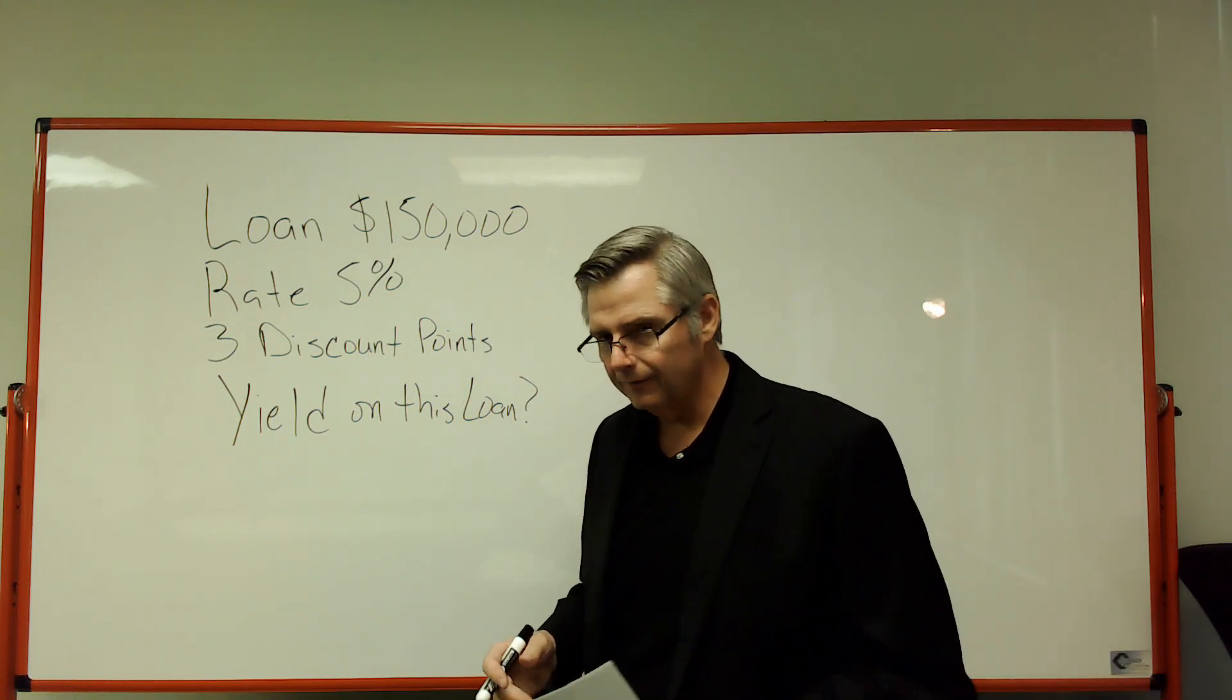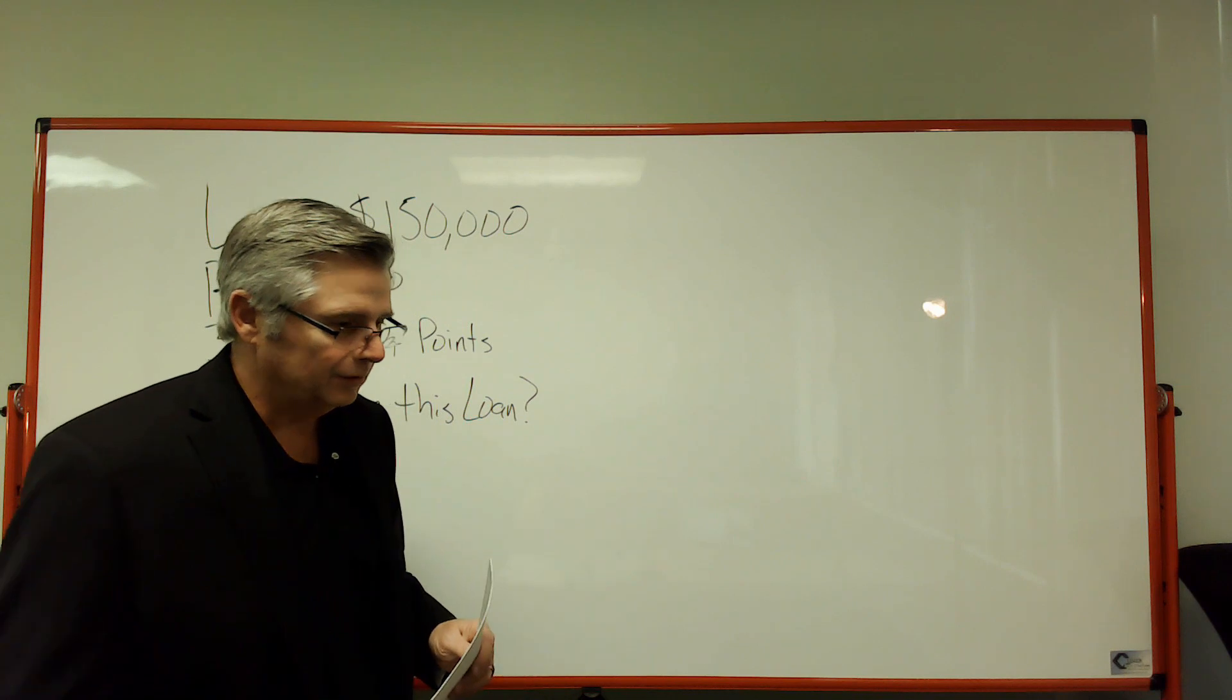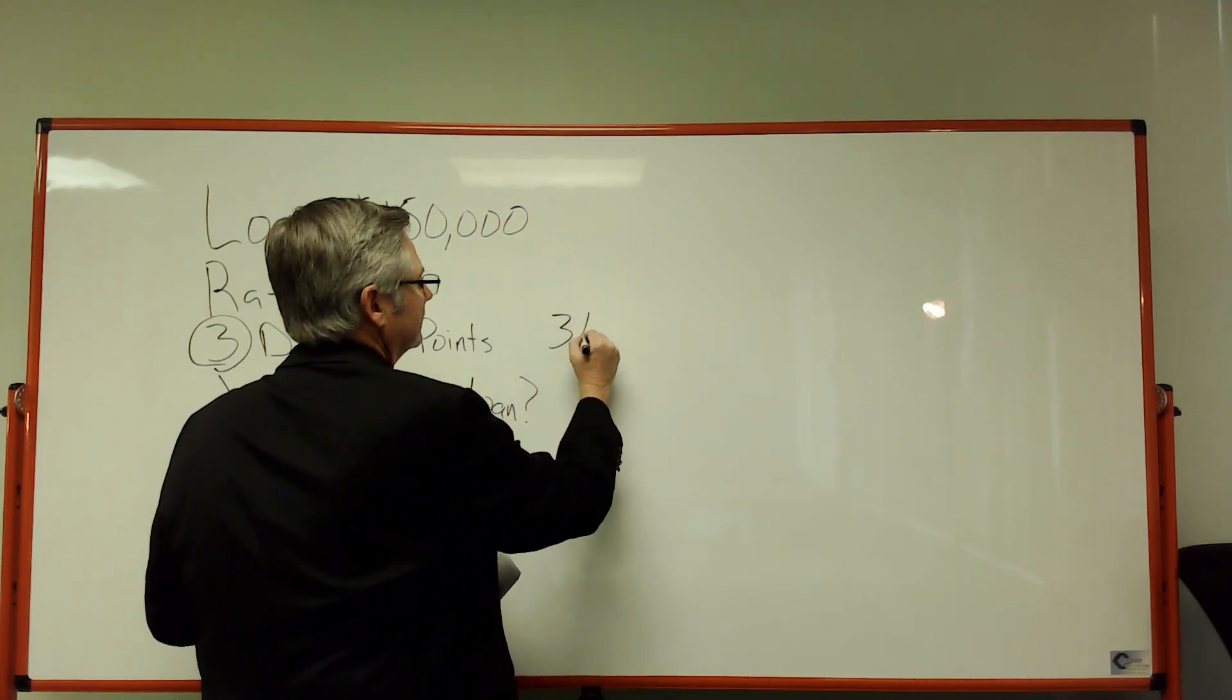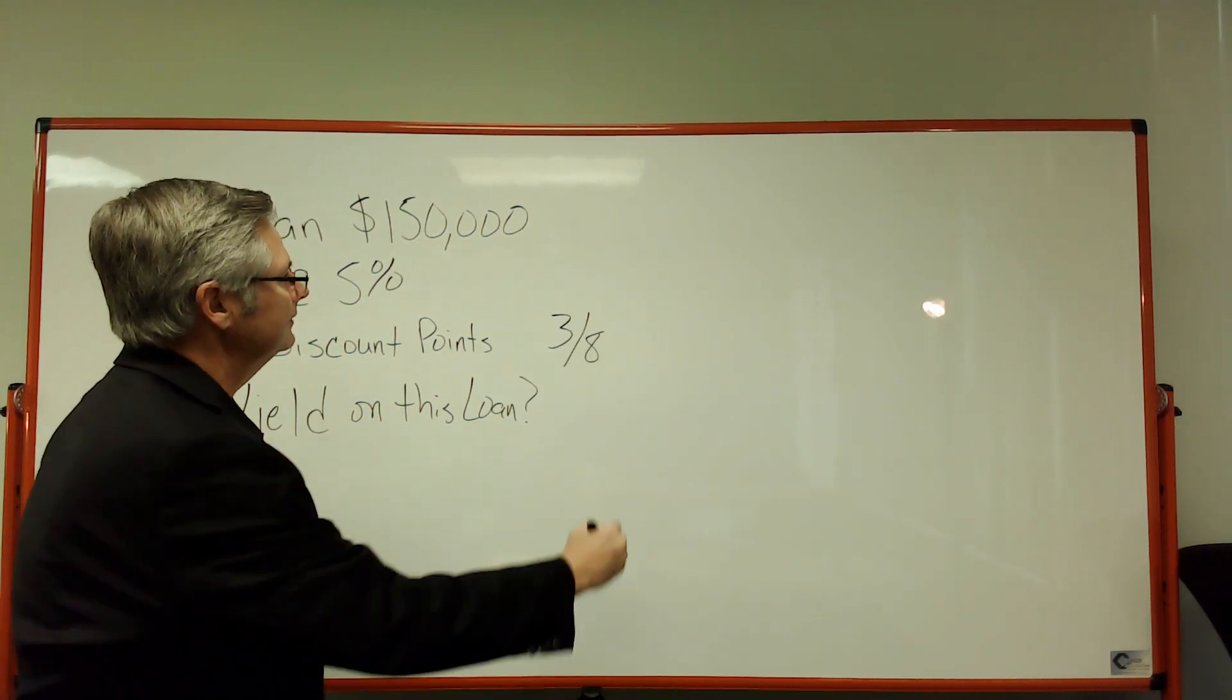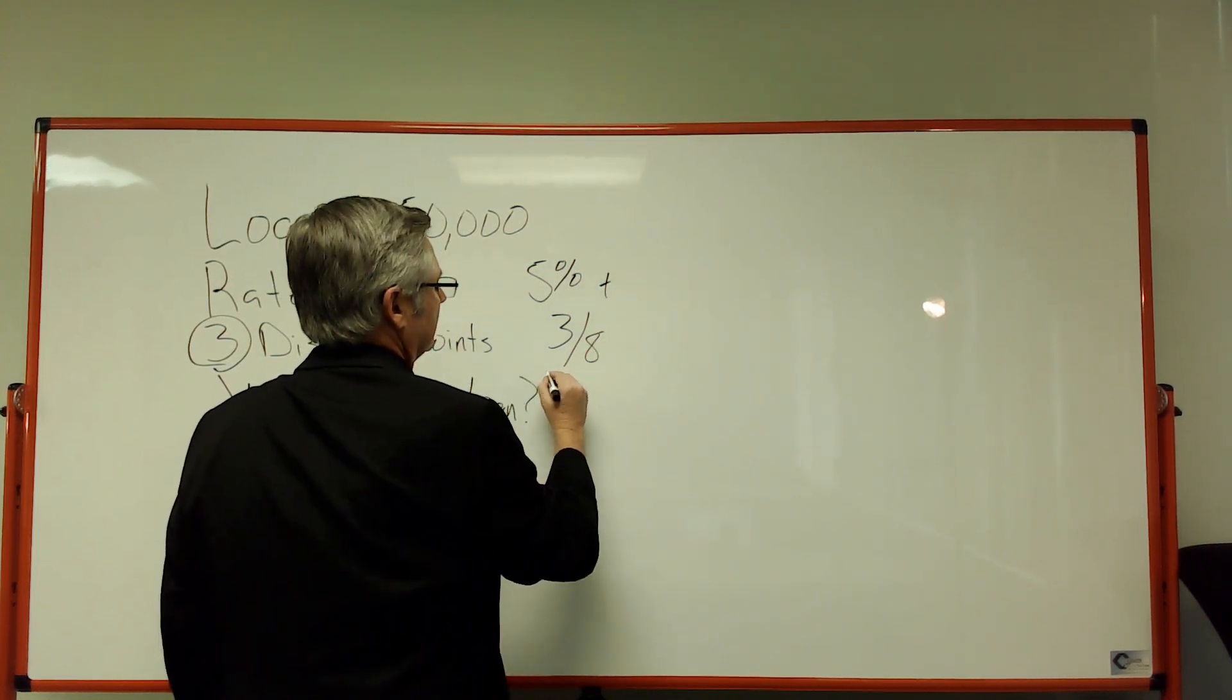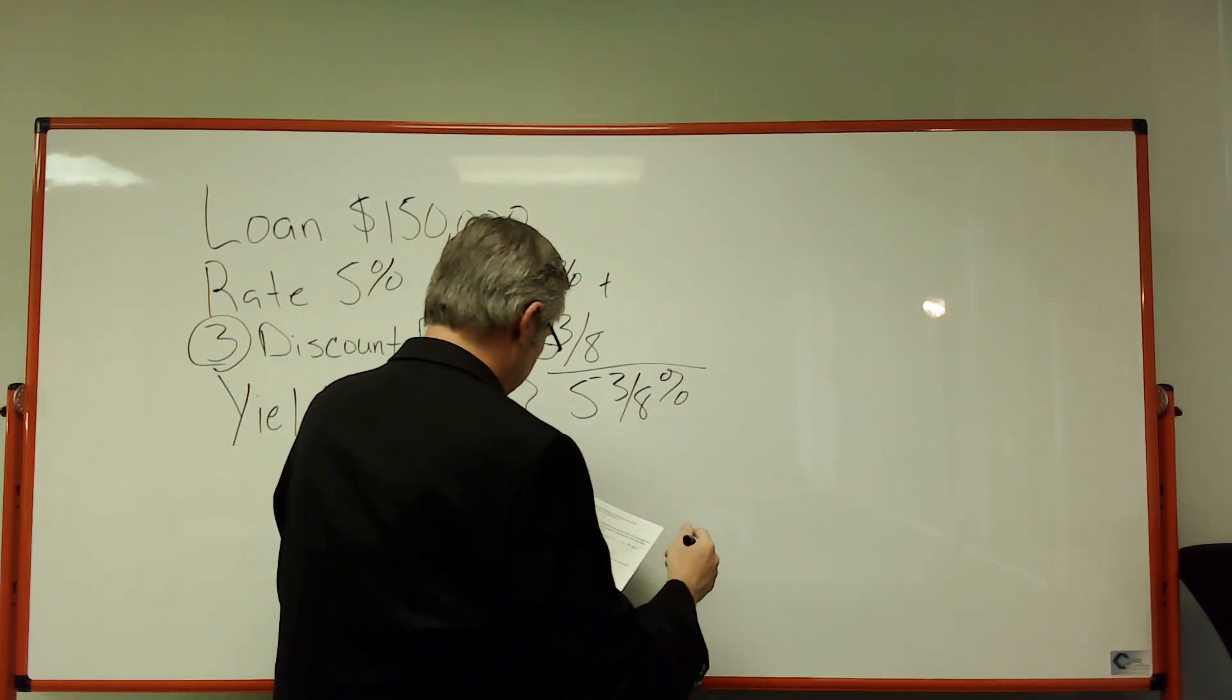This is a really easy question. What I always tell my students is, when you want to figure yield, you take the number of points and you throw it over an eighth. Then you take the rate of 5% and add that to it, and that gives you 5 and 3/8. And that's the yield to the lender.